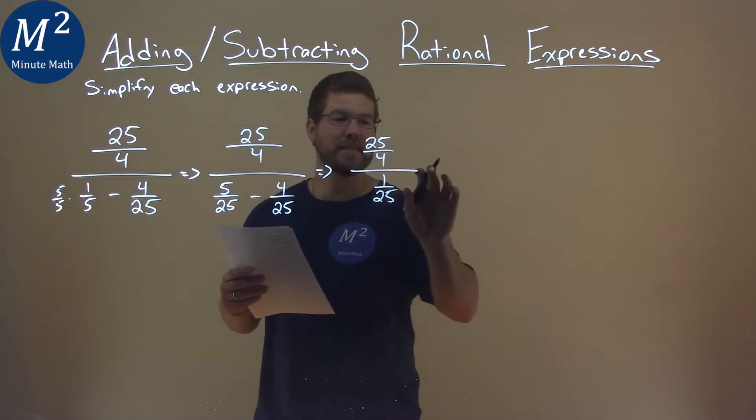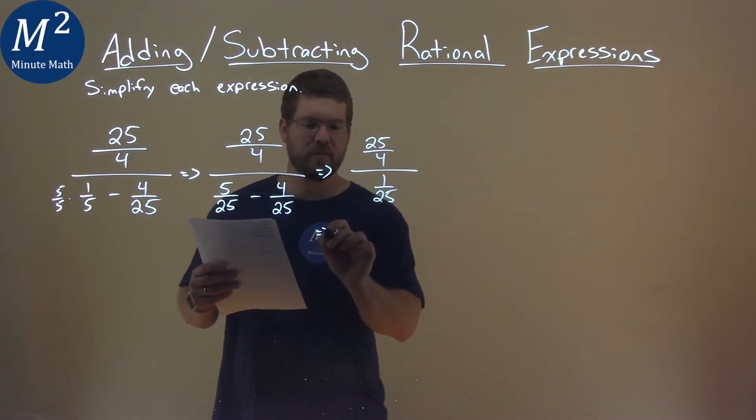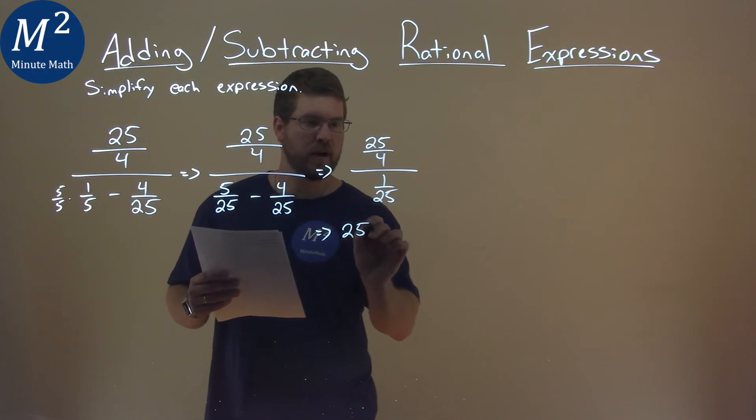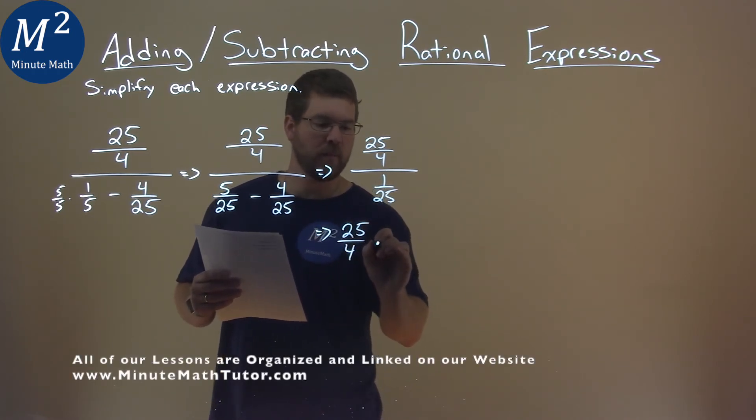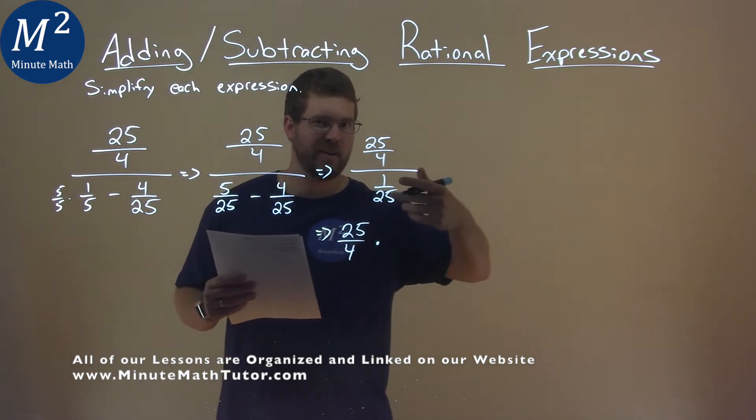Well, the way I see these division problems, I see them as multiplication. We have 25 over 4, and instead of dividing by 1 over 25, we can multiply by the flip of it: 25 over 1.